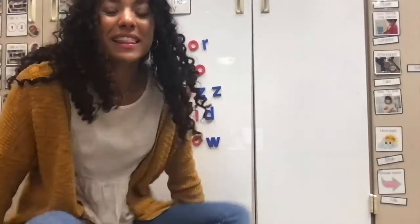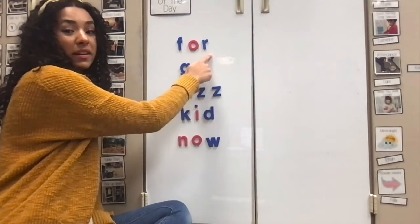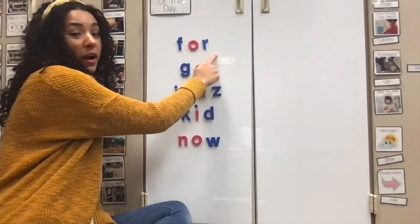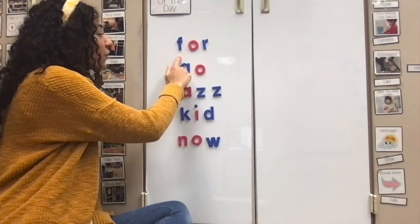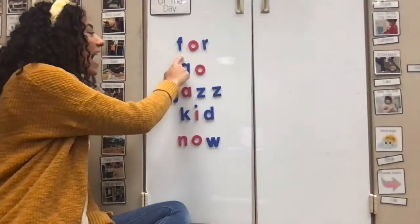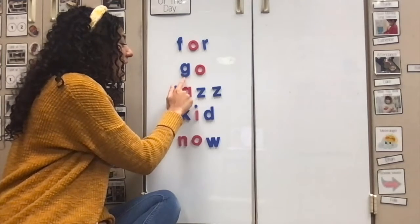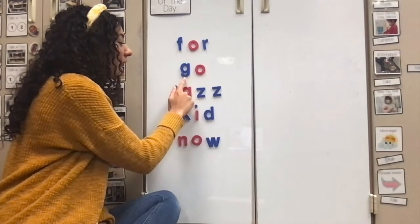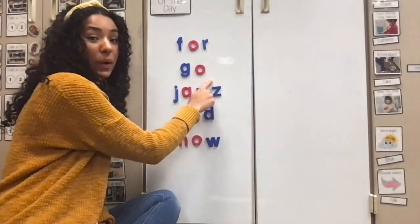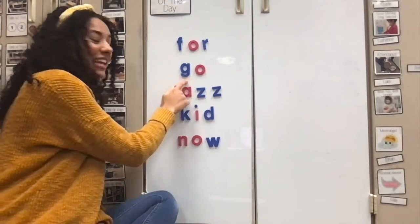All right, let's try to find the beginning sounds of these words behind me. Whoa! Look at that. All right, can you say ffff, fff? What does fff start with? F. The letter F. Let's go down to the next one. G, g, g, go. What does g, g, g start with? The letter G.